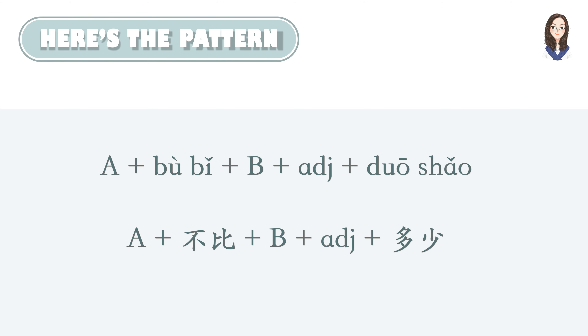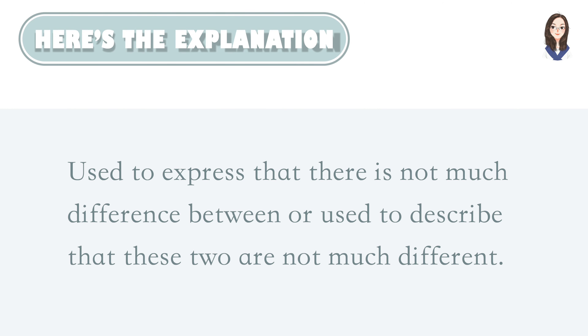Now here's the pattern: A plus 不比 plus B plus the adjective plus 多少. This pattern is used to express that there is not much difference between two things, or to describe that these two are not much different.